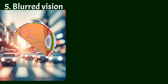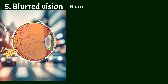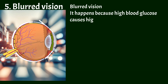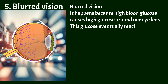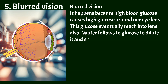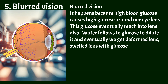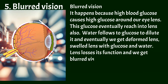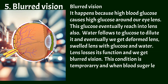The last important early symptom is blurred vision. This happens because high blood glucose causes elevated glucose levels around the eye lens, which eventually diffuses into the lens itself. Water follows glucose to dilute it, and as a result we get a deformed, swollen lens filled with glucose and water. The lens loses its function and we experience blurred vision. This condition is temporary, and when blood sugar levels are corrected, vision will also improve.